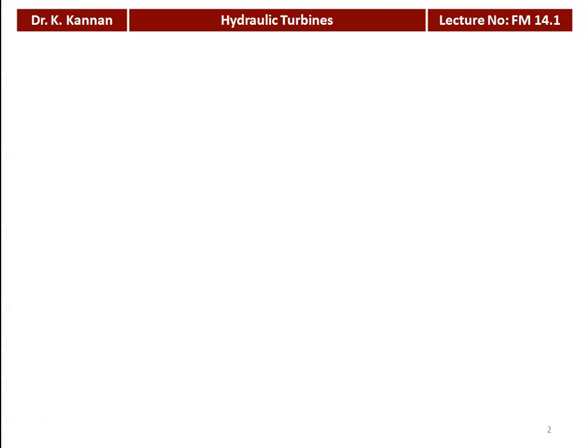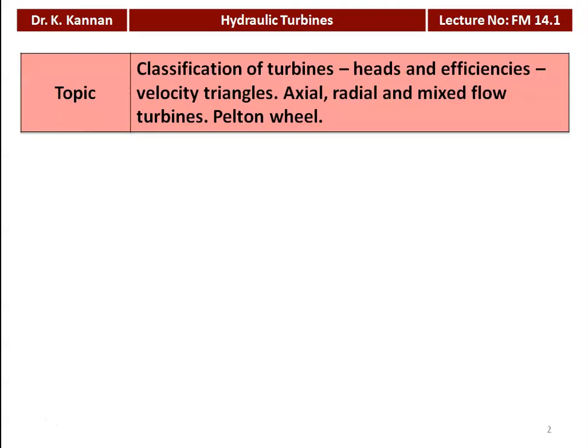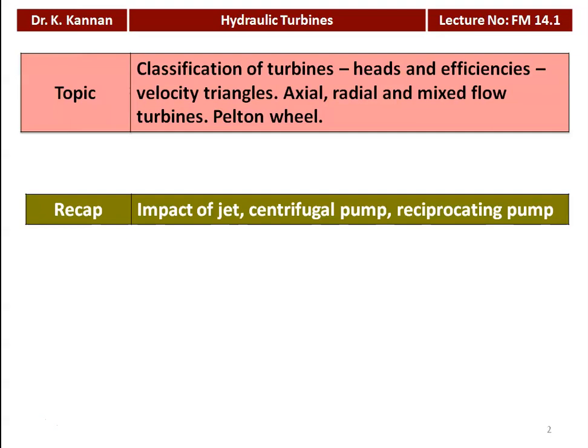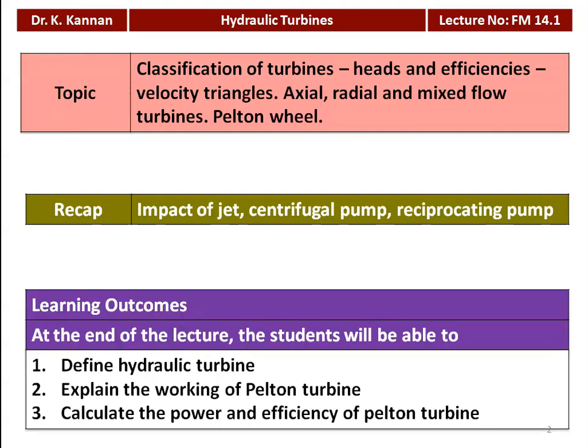In this lecture series on chapter 14, we are going to discuss about the Hydraulic Turbine. The topics for this lecture are: Classification of Turbine, Heads and Efficiency of Turbine, Velocity Triangle, Axial, Radial, Mixed Flow Turbines, and Pelton Wheel. In the earlier lecture, we discussed the impact of jet, centrifugal pump, and reciprocating pump. The learning outcome for this lecture: the student will be able to define hydraulic turbine, explain the working of the Pelton turbine, and calculate the power and efficiency of the Pelton turbine.